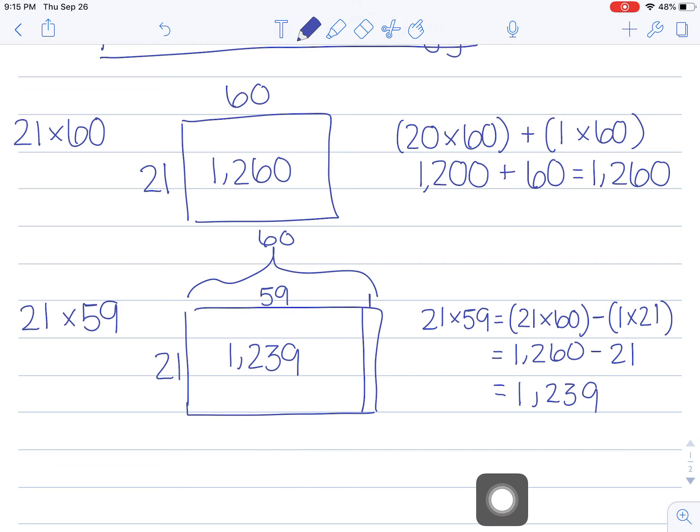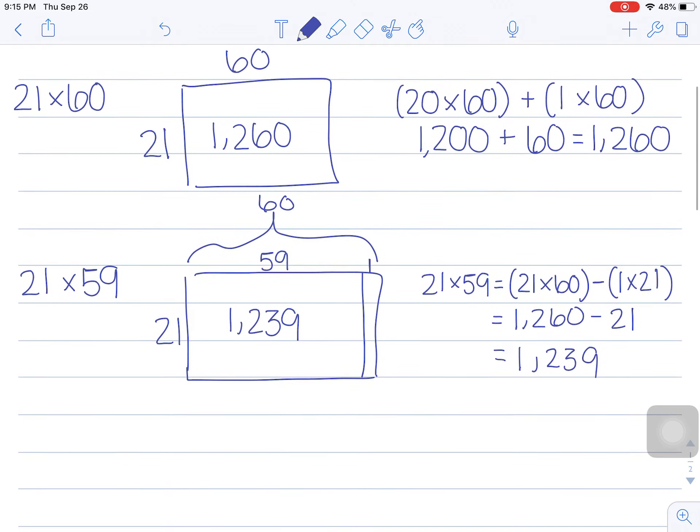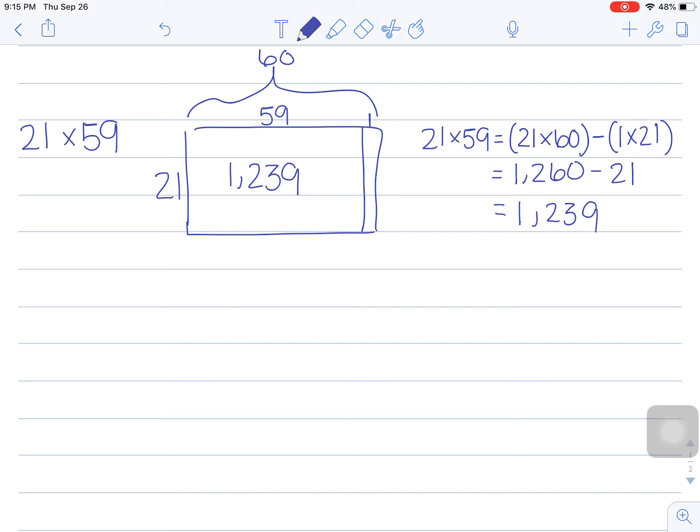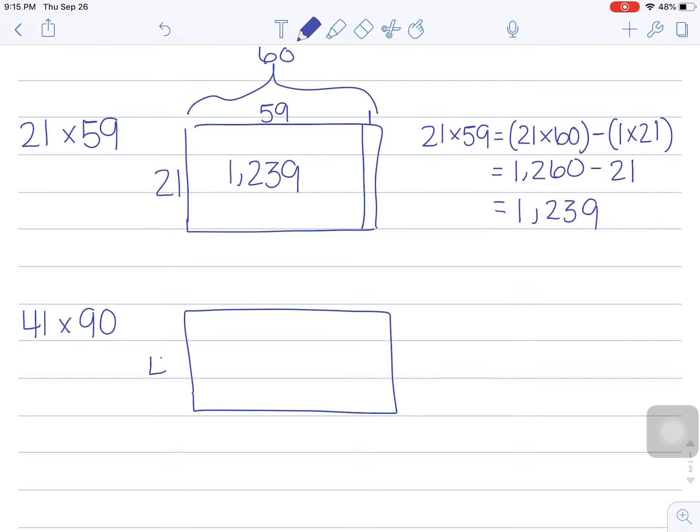Hopefully that was simple and it didn't take too much and it's not confusing. If it is and you're feeling a little lost, you can go back and rewind or just stick with me. The next problem we're going to solve is 41 times 90. We're going to go ahead and draw an array for 41 times 90.